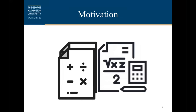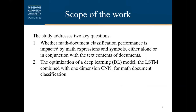What differentiates a mathematics document from any other document? If you look at any mathematics document, it's clear that it doesn't include only text — it includes a combination of text with math formulas, expressions, and equations. This led us to ask the following question: whether math document classification performance is impacted by these math expressions and symbols, either alone or in conjunction with the text content of documents. The main goal of this study is to answer this question by investigating each case using a deep learning model — training the model with text only, then with a combination of text and math, and also training with math only.